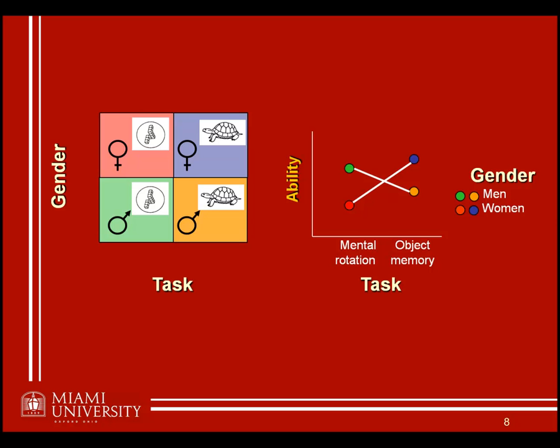What type of factorial design would we call this? It would be a 2 by 2 factorial design. We have two different factors, so each one needs a number. How many different genders are there? Two — that's our first number. How many different tasks are there? Two — and that's what makes it a 2 by 2 factorial design.